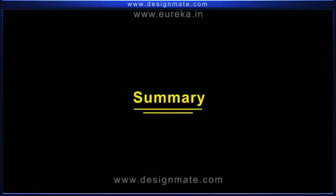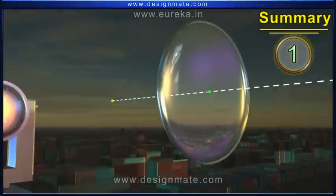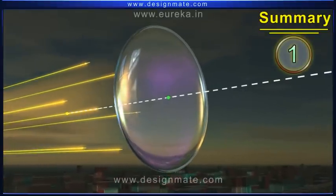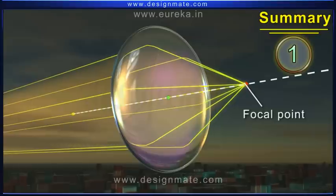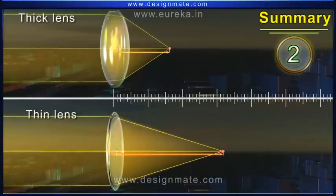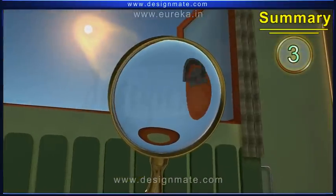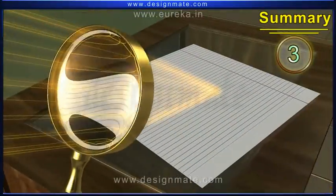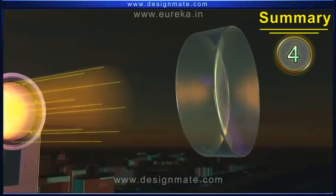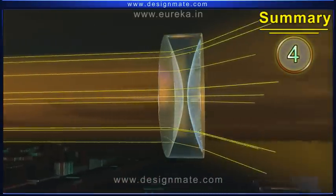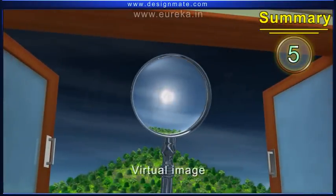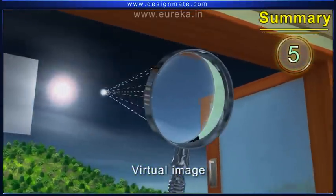To summarize: one, light rays parallel to the principal axis and incident on one side of the convex lens undergo refraction and converge at a point on the principal axis on the other side. Two, the focal length of a thinner lens is greater than that of the thicker lens. Three, a real image produced by a convex lens is formed on the other side of the object. Four, the parallel rays of light incident on a concave lens undergo divergence as they emerge on the other side. And five, the concave lens produces a virtual image that is an image formed on the same side of the object.